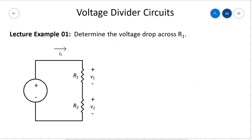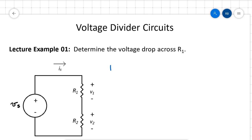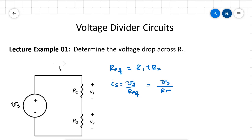Moving right along, let's take a look at our first lecture example. This is a voltage divider circuit characterized by two resistors, R1 and R2, in series supplied by a voltage source Vs. We can find the equivalent resistance R_eq, and that equivalent resistance is equal to R1 plus R2. We know that the current through the two resistors in series, Is, is equal to Vs over R_eq, which is equal to the supply voltage over R1 plus R2.